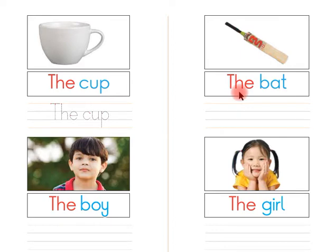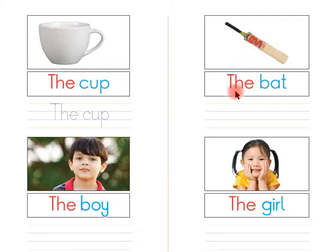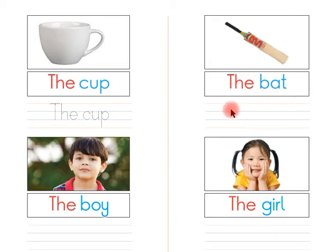Listen again, children: the bat. Listen one more time, children: the bat. Now say with me, children: the bat. Say again, children: the bat. Now read with me, children: the bat. Read again, children: the bat. Children, now you have to write 'the bat' here in between these four lines by yourself.